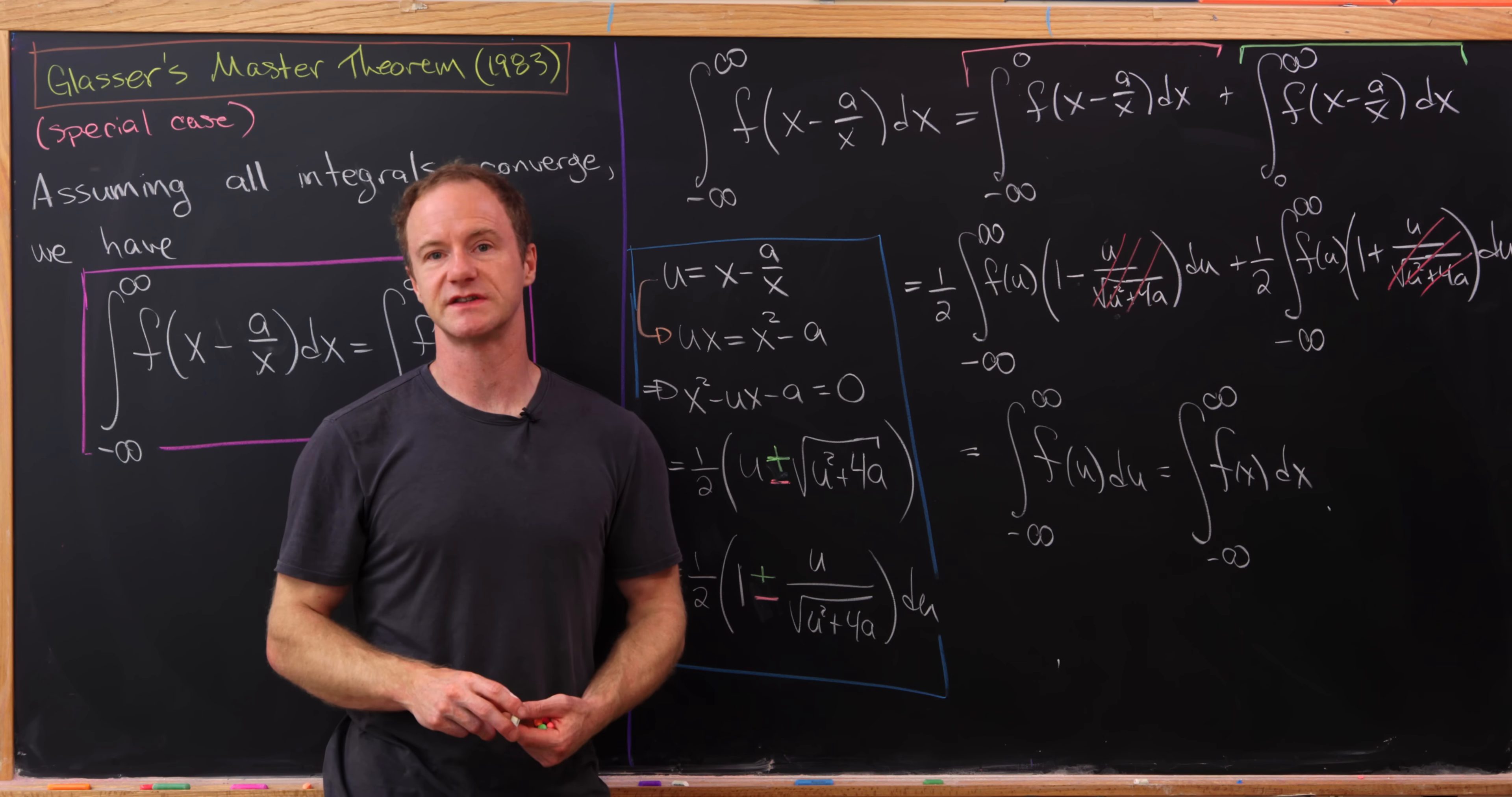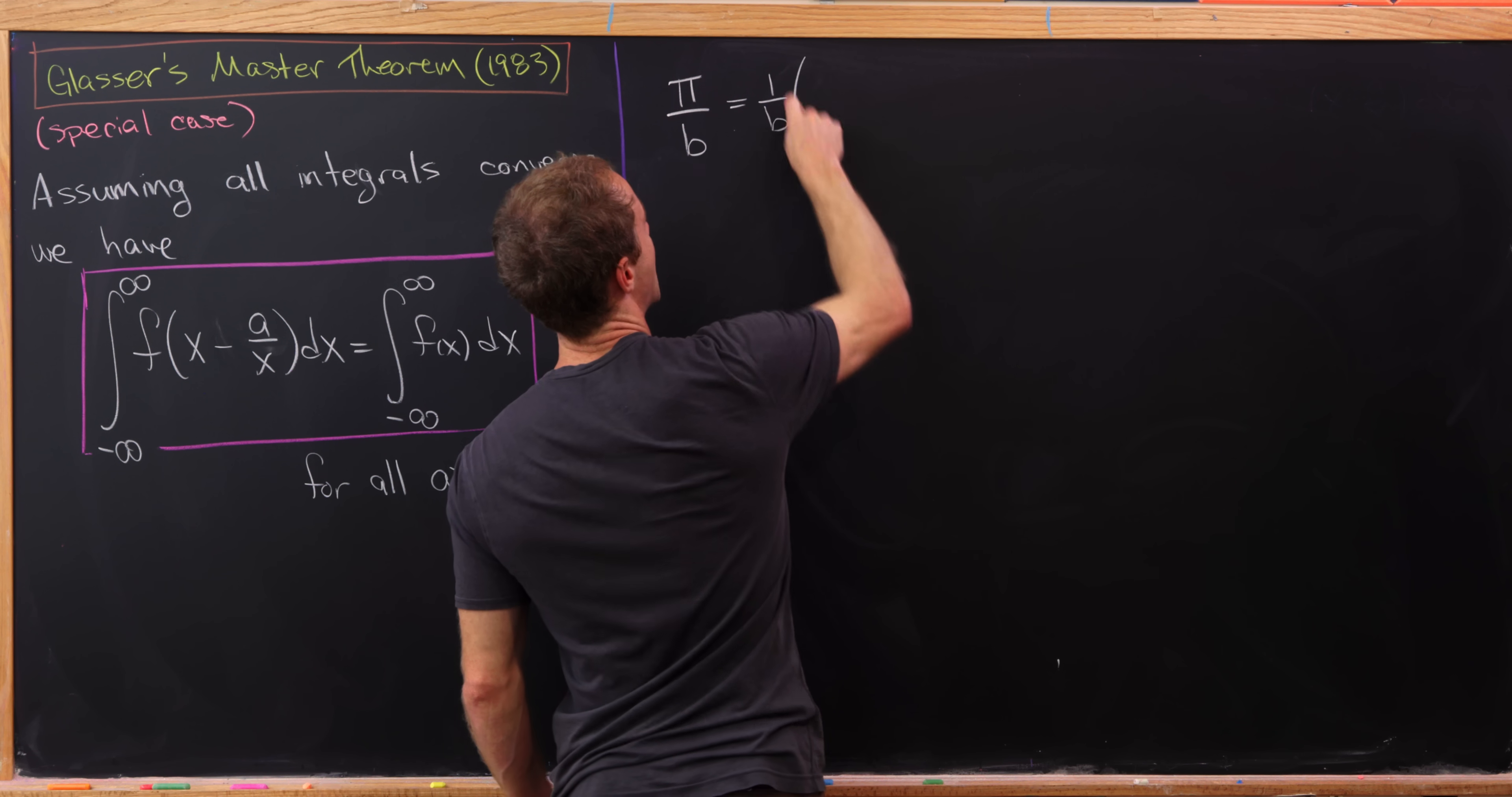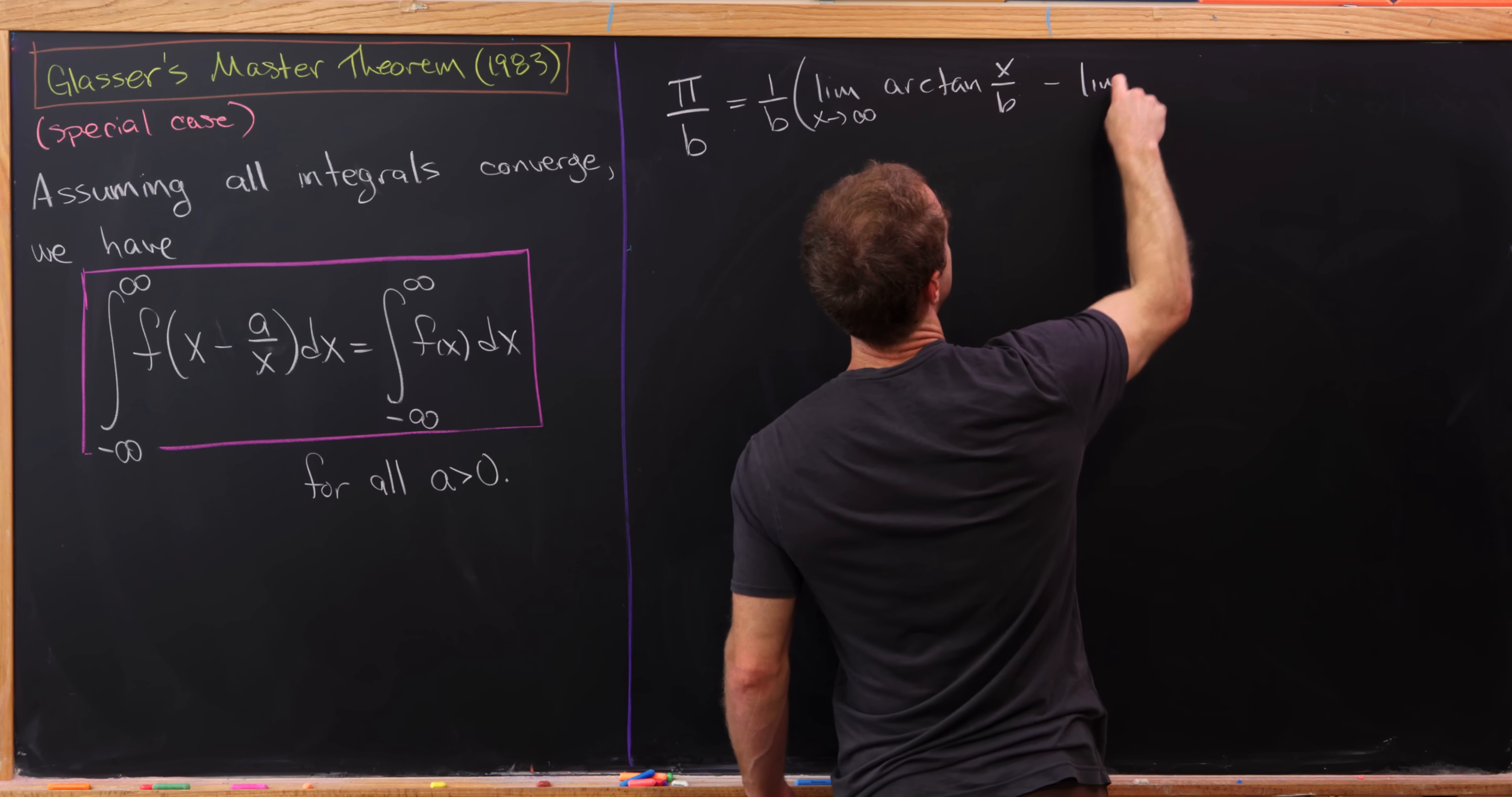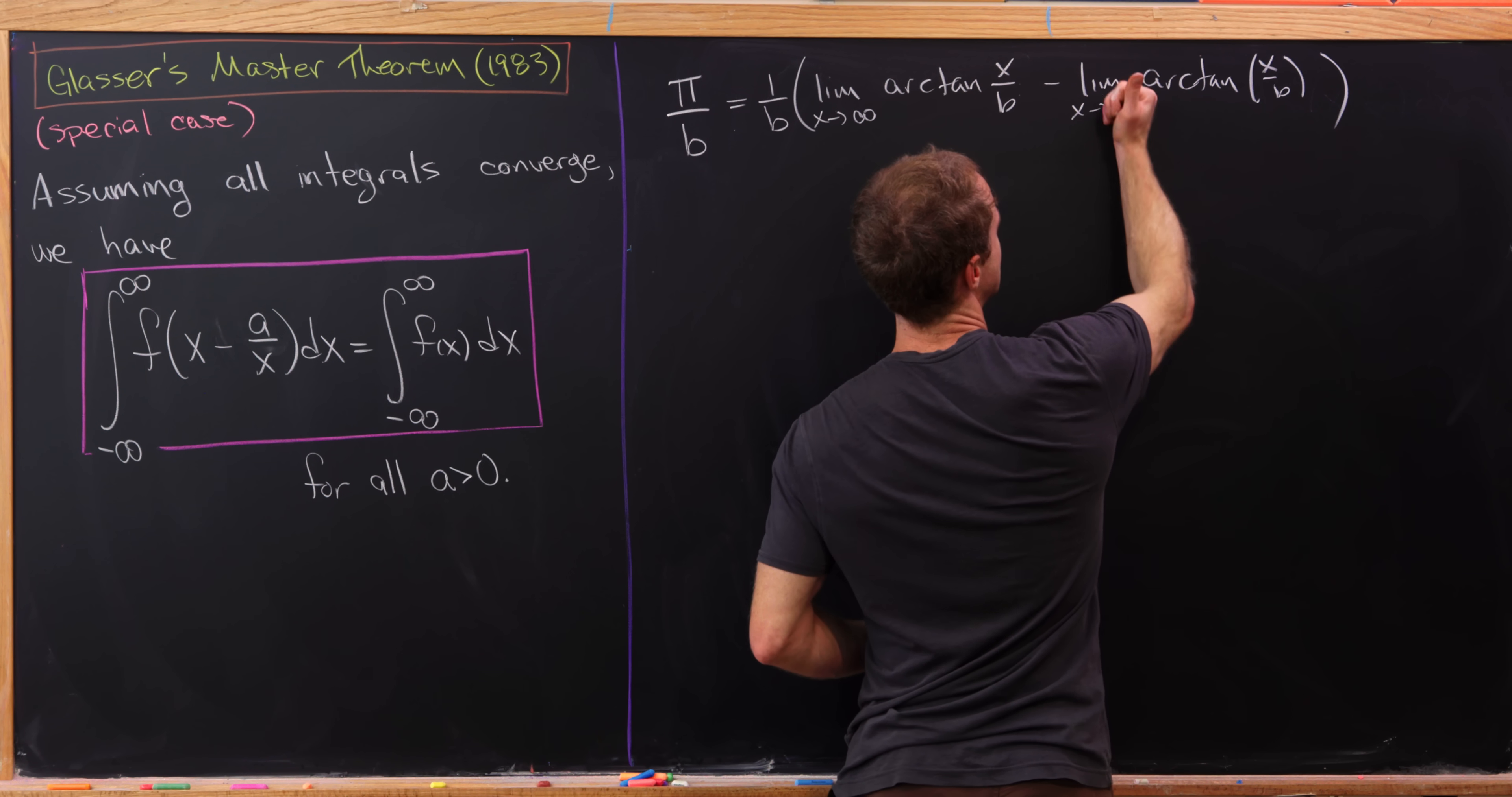Let's look at a nice application of this formula. For our nice application, we're going to start with the number pi over b. But notice that pi over b can be rewritten as 1 over b times the limit as x goes to positive infinity of the arctan of x over b minus the limit as x goes to minus infinity of the arctan of x over b. That's because this first limit is pi over 2 and the second limit is negative pi over 2.